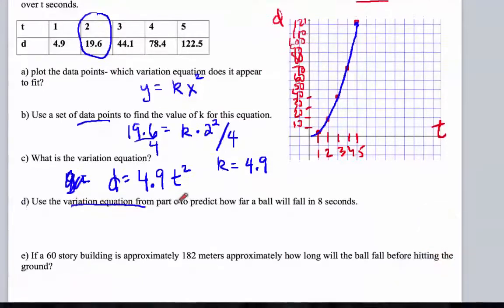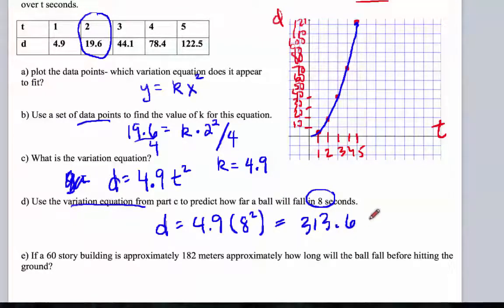All right, now let's use this variation equation to predict how far a ball will fall in 8 seconds. So our distance is equal to 4.9 times 8 squared. 8 squared is 64. 64 times 4.9 results in a long, long way to fall, or 313.6 meters.